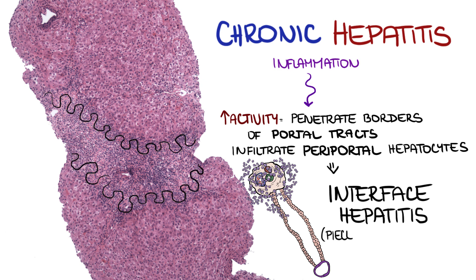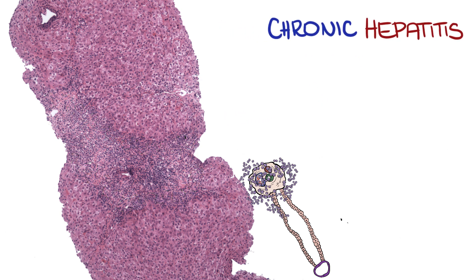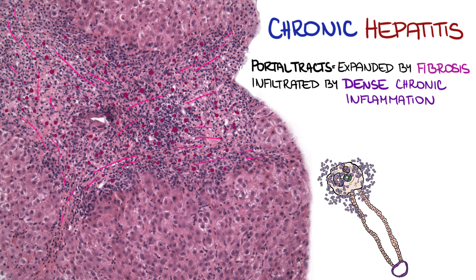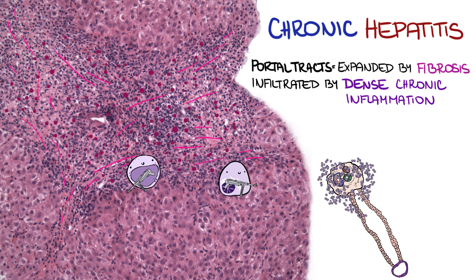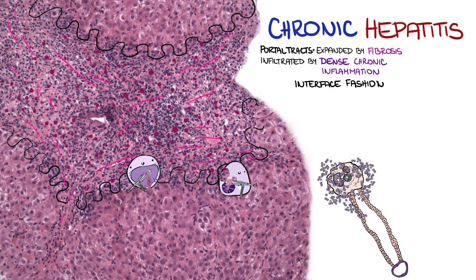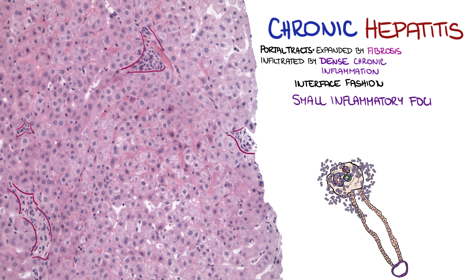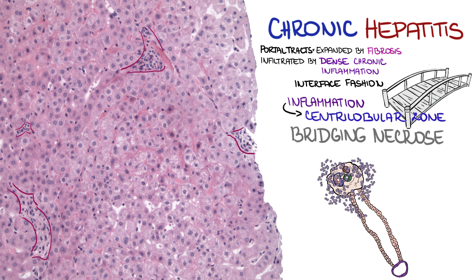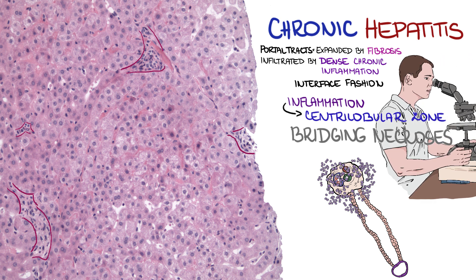The older term for interface hepatitis is piecemeal necrosis. In this picture, there are portal tracts expanded by fibrosis and infiltrated by dense chronic inflammation. The inflammatory cells cross the borders of the portal tract and damage periportal hepatocytes in the interface fashion. Often, we can see small inflammatory foci — so-called necro-inflammatory changes — in liver lobules as well. In case of marked inflammation activity, the inflammation can reach the centrilobular zone and create bridging necrosis. In this phase, it may be very difficult to differentiate chronic and acute hepatitis solely on morphological grounds.